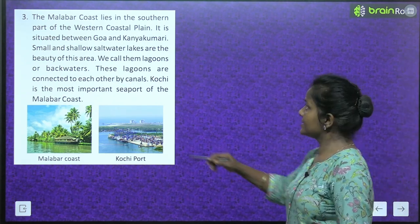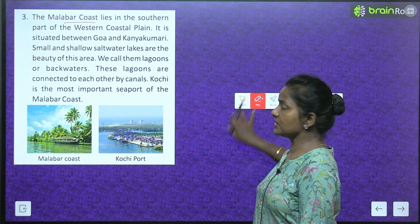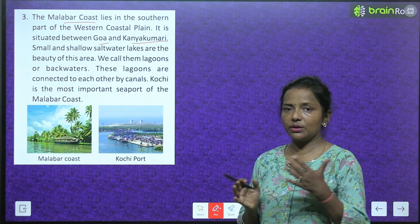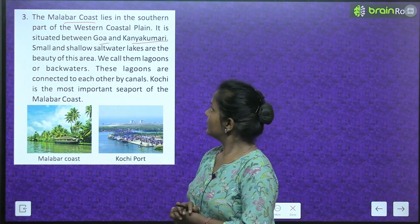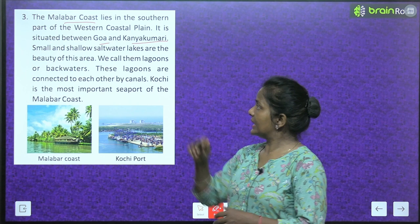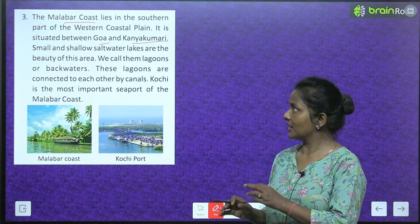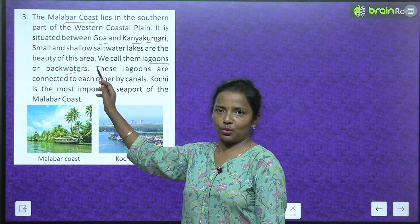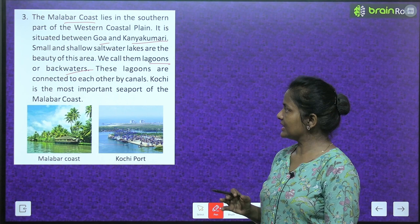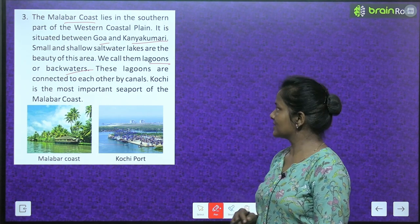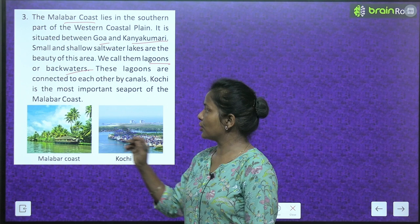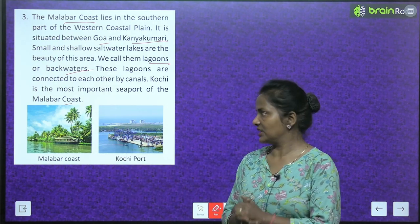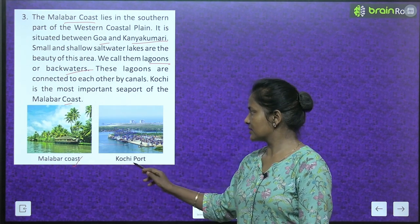The Malabar coast lies in the southern part of the western coastal plain. It is situated between Goa and Kanyakumari. Small and shallow saltwater lakes called lagoons and backwaters are the beauty of this area. These lagoons are connected to each other by canals. Kochi is the most important seaport of the Malabar coast — see, this is the Malabar coast and this is Kochi port.